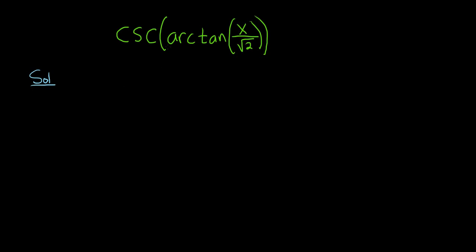So the first step in these problems is always to take this piece here and call that piece theta. So step one, we're going to let theta be equal to the inside piece, so arc tangent of x over the square root of 2.